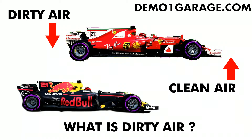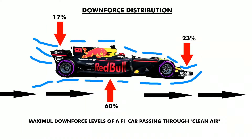Let's firstly quickly explain downforce and how it's distributed along an F1 car. Downforce in a nutshell provides more grip by forcing the car towards the ground. As the car passes through the air, the shape of the chassis and the wings placed at both the front and rear of the car produce a downwards thrust, aka downforce.